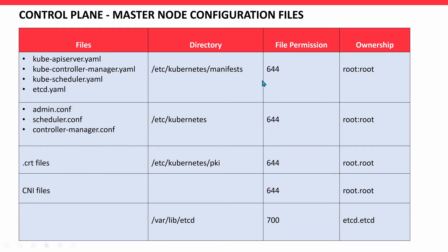Permission 644 means the owner of the file has read and write access, while group members and other users have only read access. File permission 700 on a folder or directory means only the etcd user and root can access it; other users in the system cannot see or change any files in that specific directory.